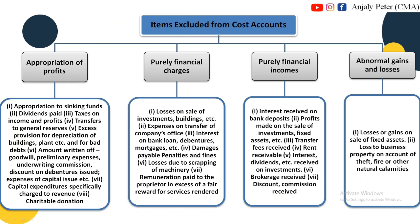Now, if we have financial accounts and profit accounts, we have all the expenses, but in cost accounts we have all the items that we have to exclude. If you want to reconcile cost accounts, the main items are 4 items to consider: first, Appropriation of Profit; then Purely Financial Charges; Purely Financial Incomes; then Abnormal Gains and Losses.